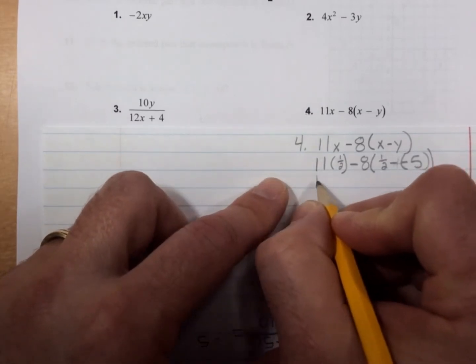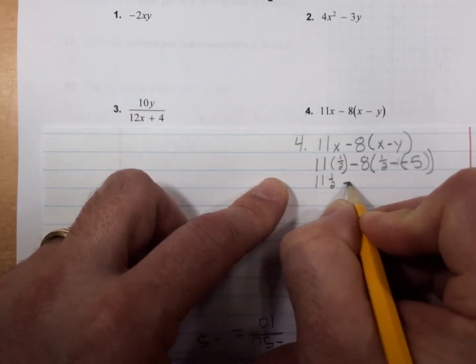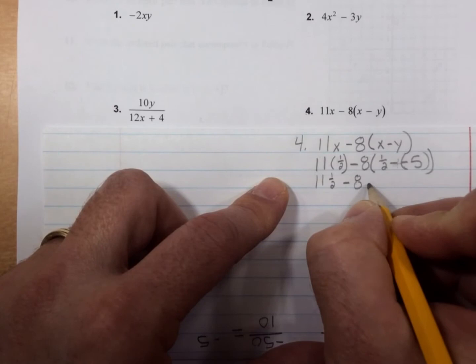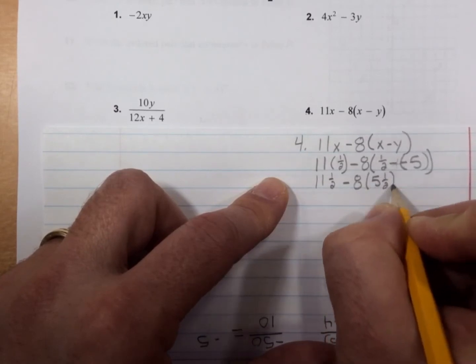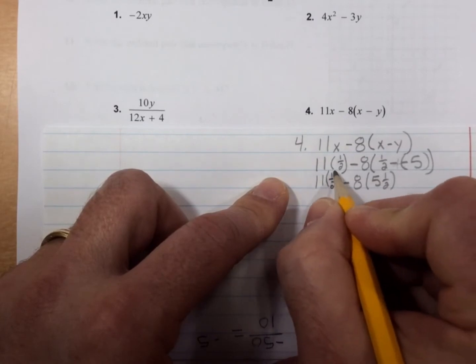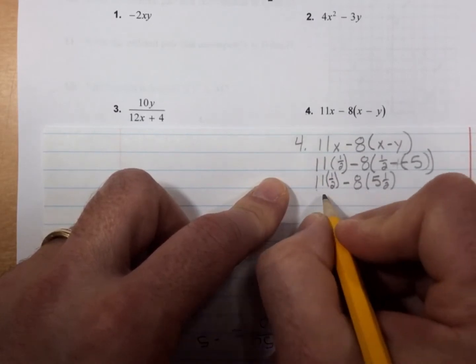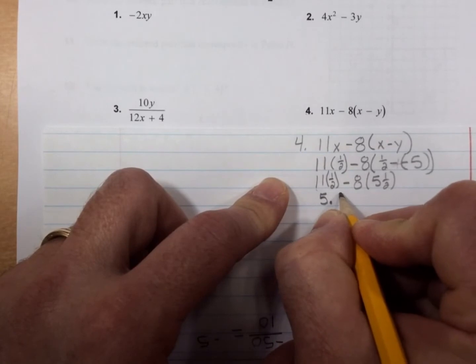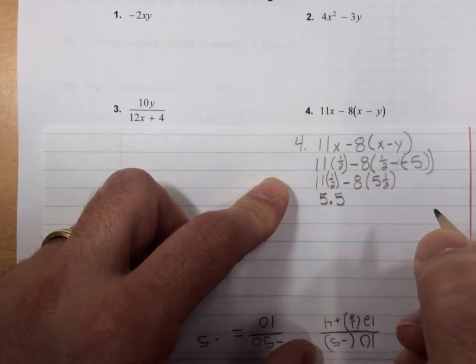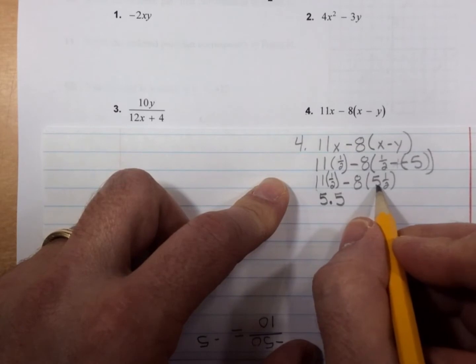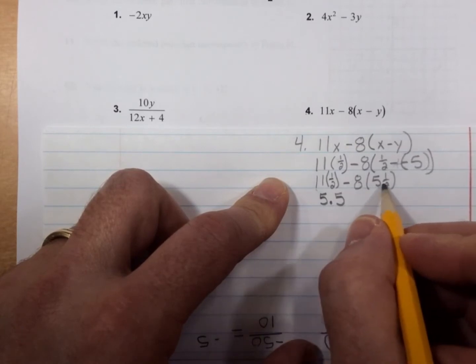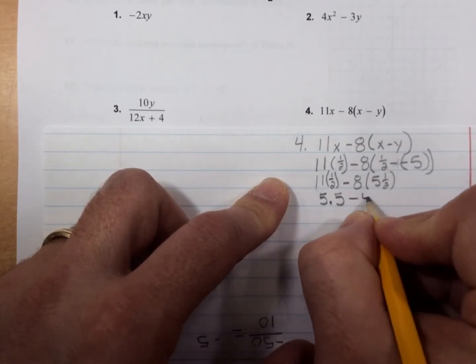So now I have 11 times 1/2 minus 8 times 5 and a half. Well, 11 times 1/2 is 5.5 or 5 and a half. And 8 times 5 and a half would be 44. So minus 44.